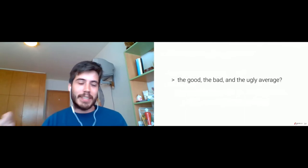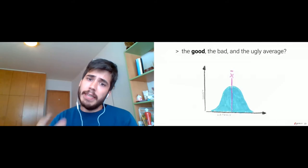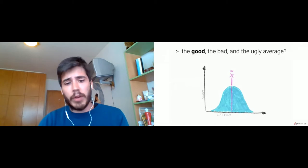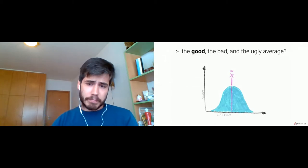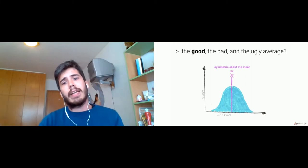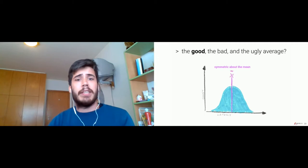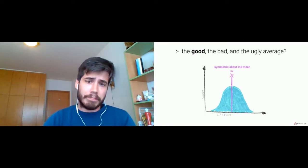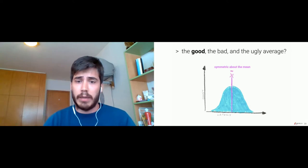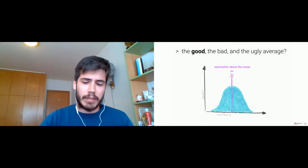The good average is basically an average that follows the normal distribution. If this was the pattern we would see if we plotted the latency distribution, everything would be perfect. We would be able to fully describe our system's latency behavior by just having a mean and a standard deviation, given that the latency distribution is symmetric about the mean. The issue is that this is not what happens in real-life scenarios on distributed systems.